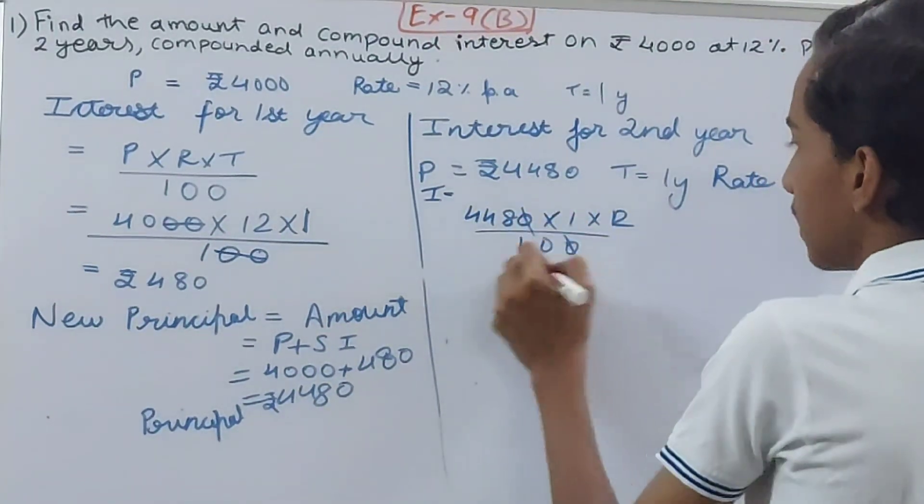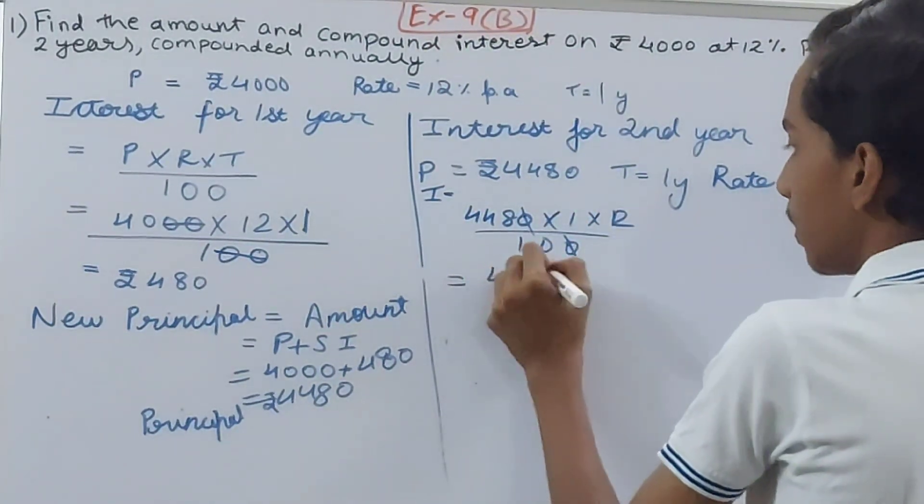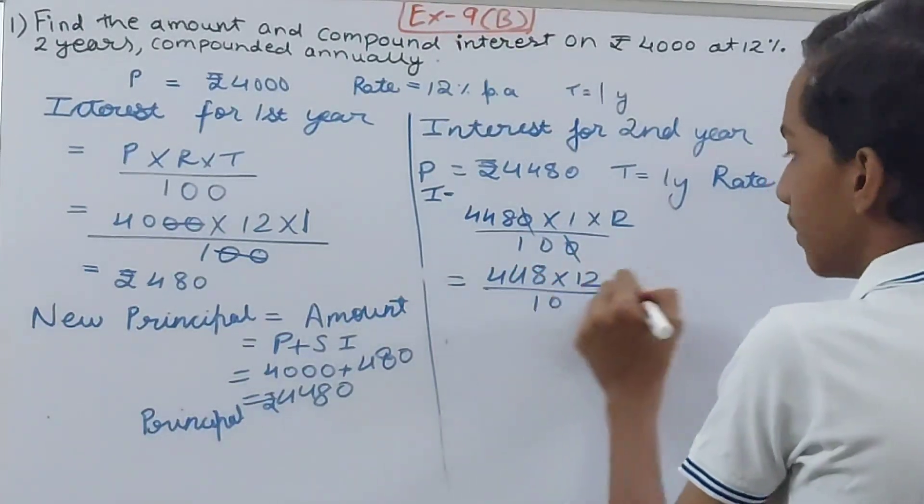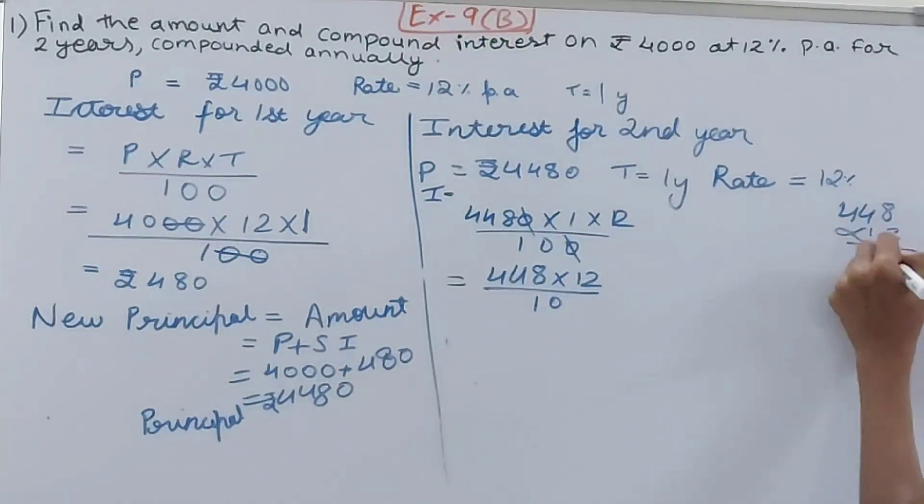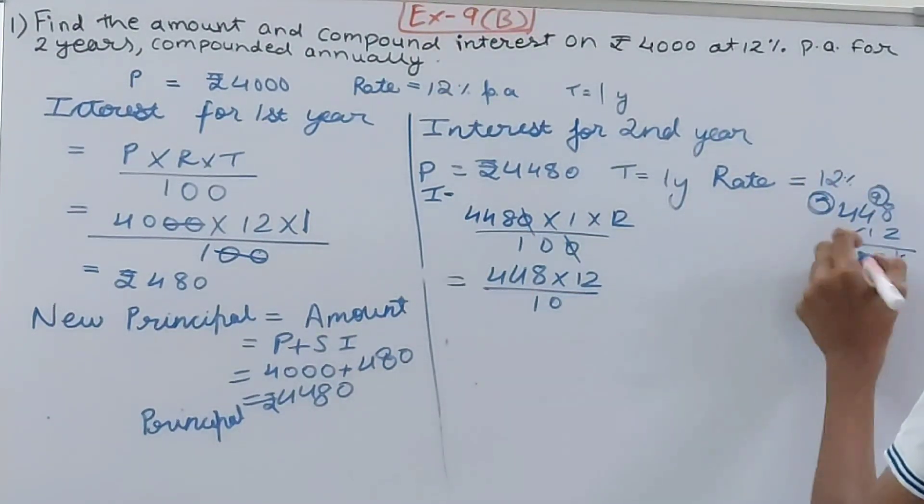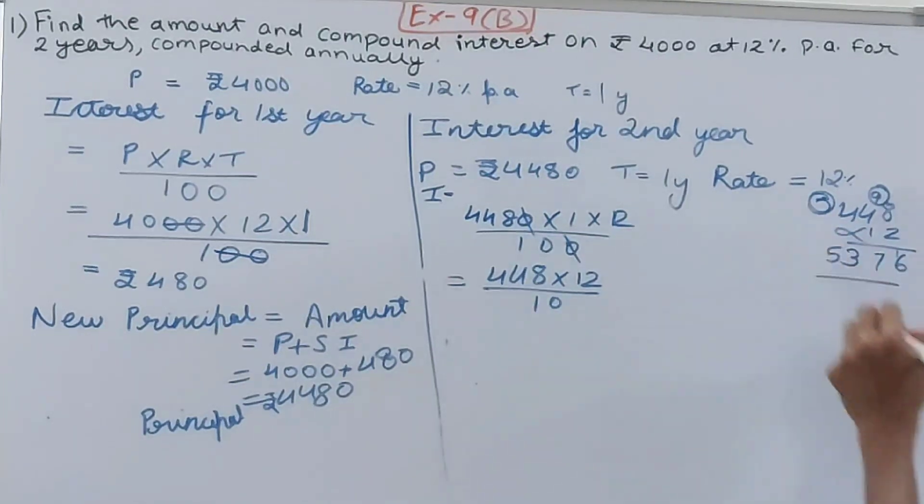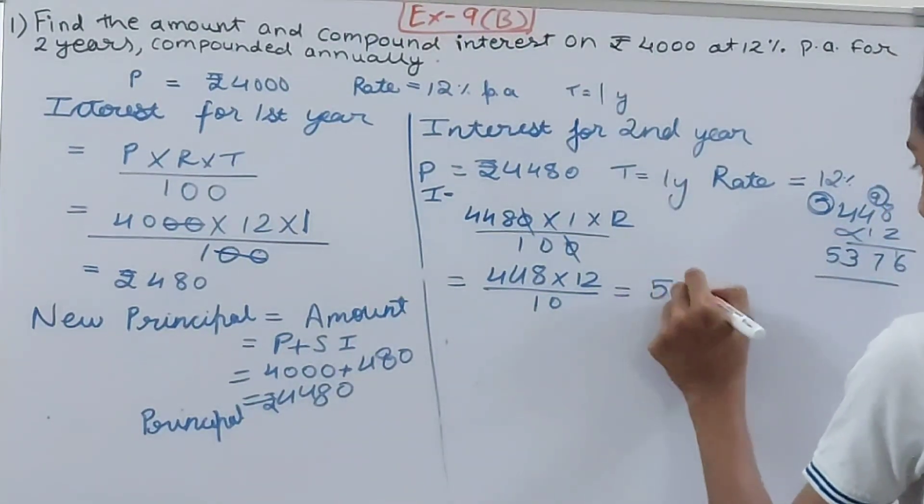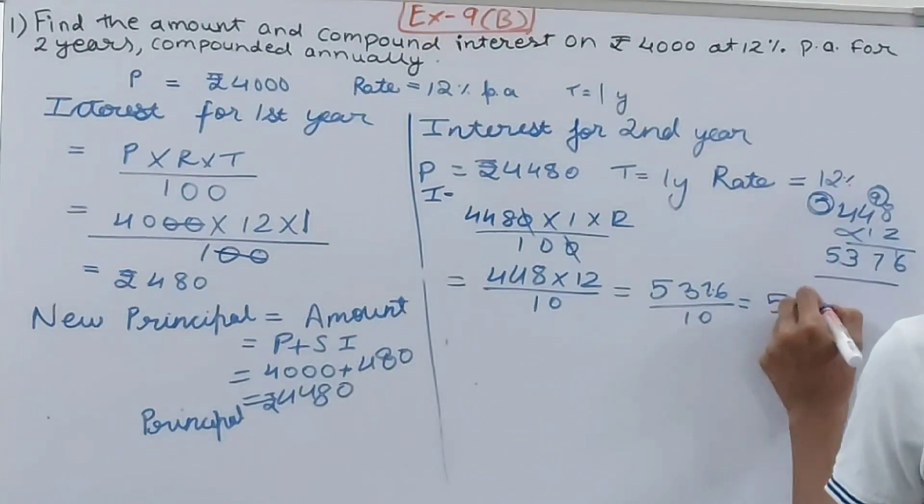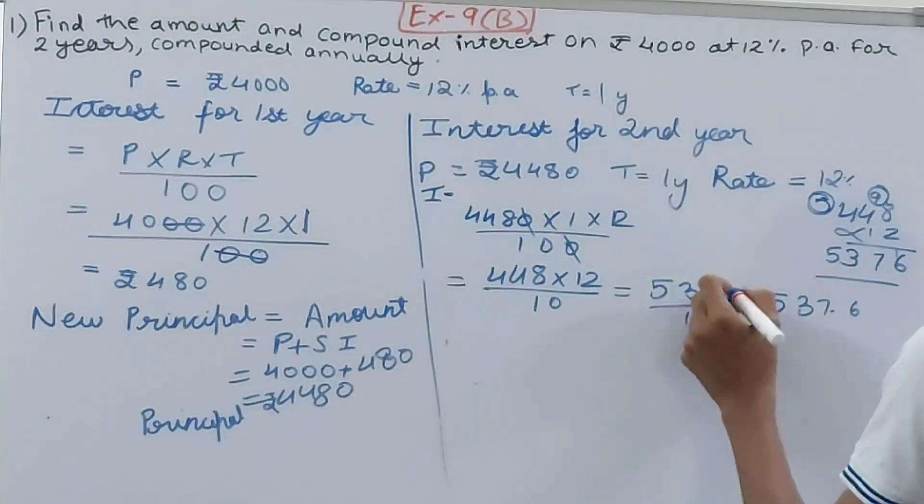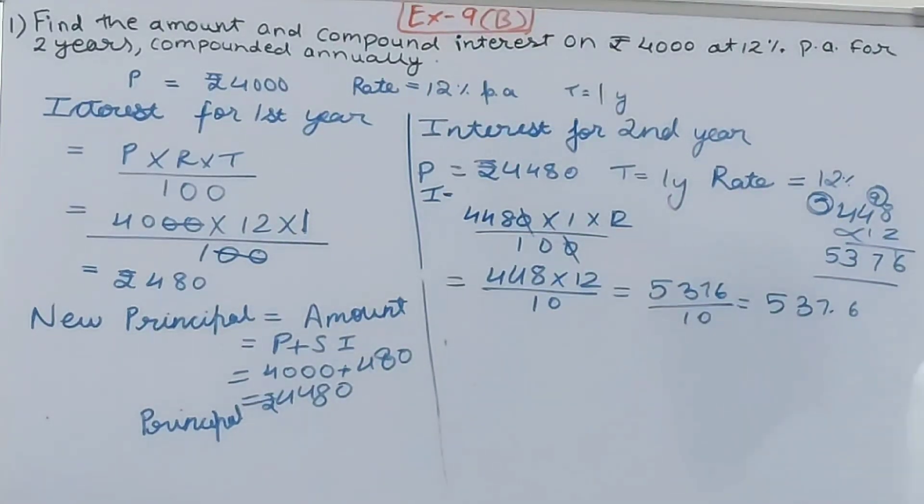So we have 4480 × 1 × 12 / 100. Cancel this zero, cancel this zero—you have 448 × 12 / 10. Let's see: 12 × 8 is 96, carry 9; 4 × 12 is 48 plus 9 is 57; 4 × 12 is 48 plus 5 is 53. So 5376 / 10—that is, put a point here—537.6. Rupees 537.6 is the interest.